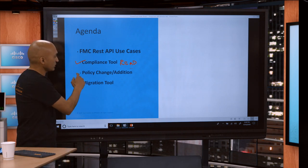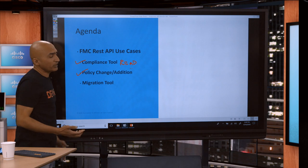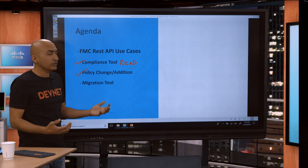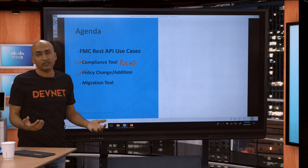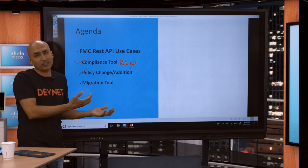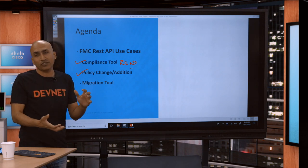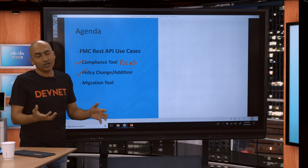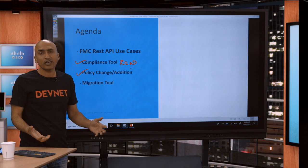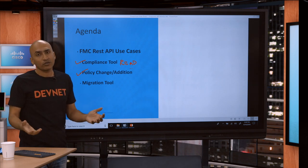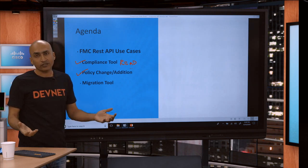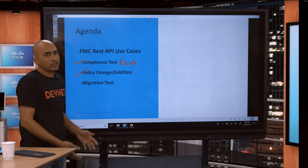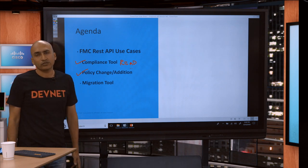The second use case, which is a very important and widely used one, is policy changes and additions. When I say policy, I'm encapsulating everything underneath it — like doing bulk modifications on objects or bulk modifications on rules. You can use APIs to do that.